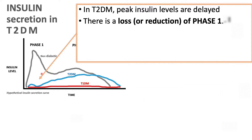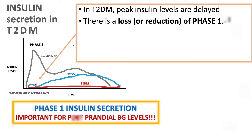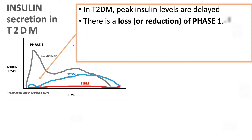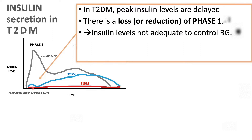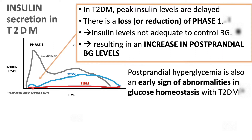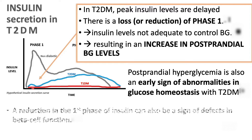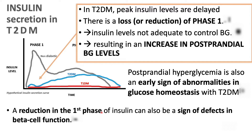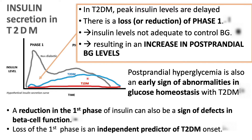This is a problem because phase 1 is especially important to bring down postprandial glucose levels. In type 2 diabetes, insufficient amounts of insulin are being released, so it's not enough to control blood glucose levels, and in turn this leads to an increase in postprandial blood glucose levels. Postprandial hyperglycemia is also an early sign of abnormalities in glucose homeostasis. A reduction in the first phase is also a sign of beta cell dysfunction and a predictor of type 2 diabetes onset.